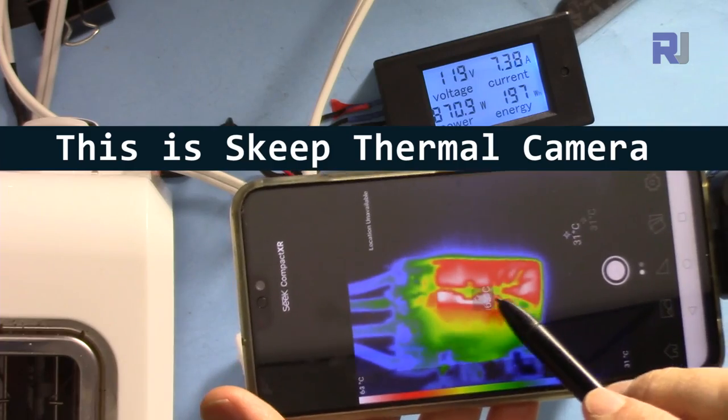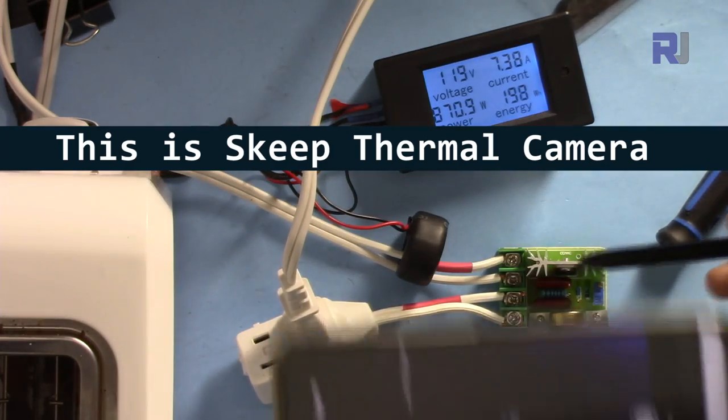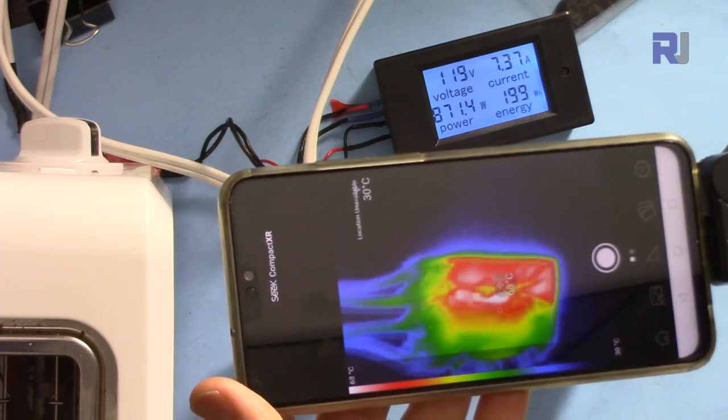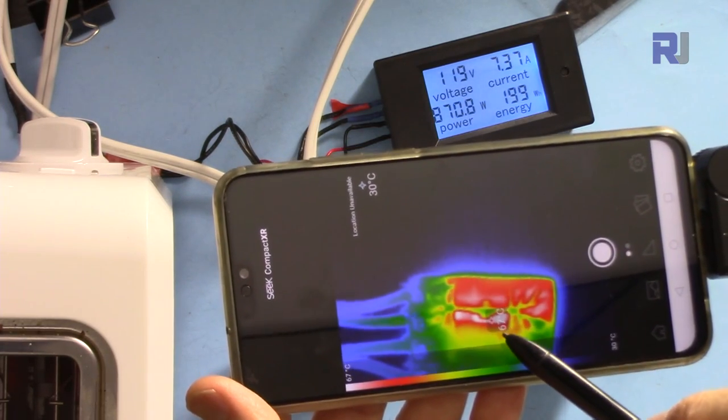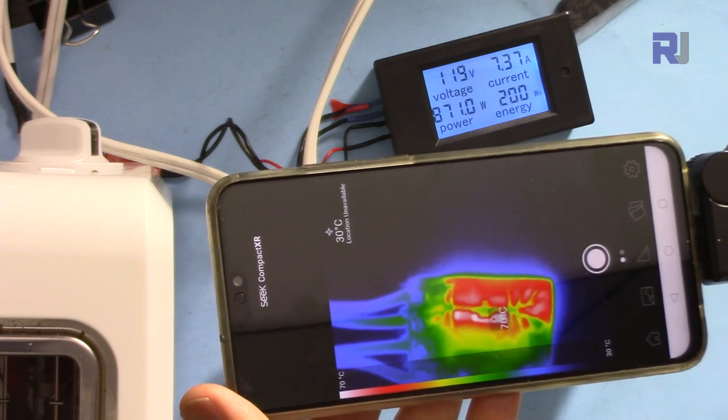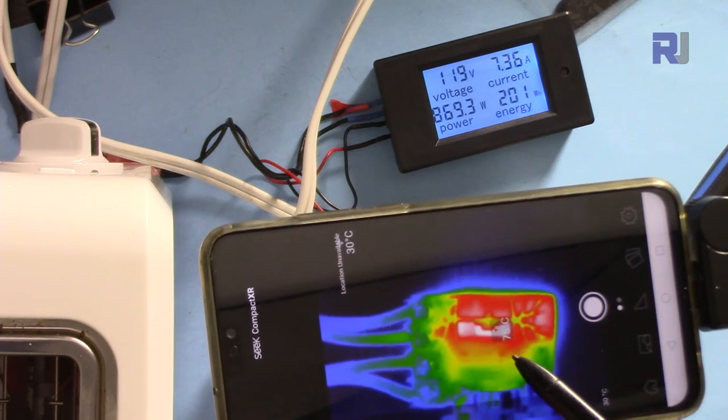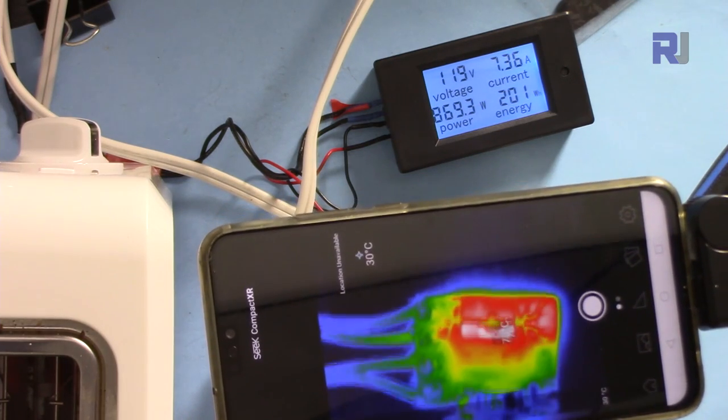Now let's see how fast this is heating up using the thermal camera. 60, 69 degrees, 73, 72 degrees, 75, so that's very normal.